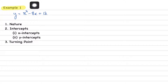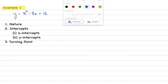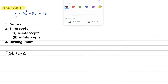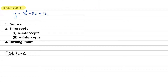We have an example question: y equals x squared minus 8x plus 12. Straight off the bat, we can determine the nature. In nature, we have two options — maximum or minimum. The coefficient of x squared is 1, which is positive, so it is going to be of minimum nature — a happy face. Nature determined.